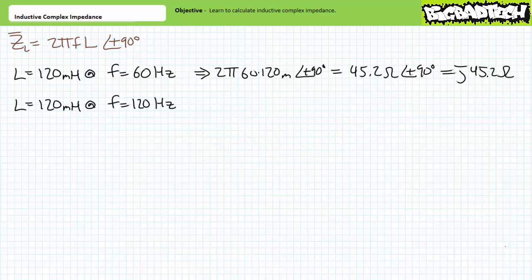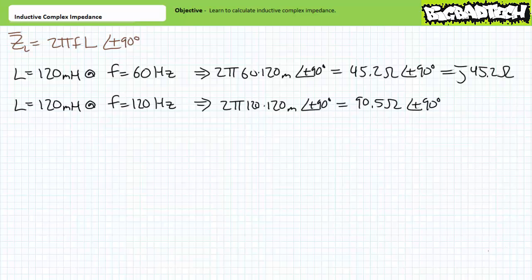You should realize that the magnitude of the complex impedance of the inductor should increase, since the complex impedance of purely inductive elements is proportional to 2πfL. Given frequency is doubled, the magnitude of inductive impedance will be twice its original value. The angle, however, will remain fixed at positive 90 degrees. Substituting in the given values at 120 hertz, we find the magnitude of the inductive complex impedance has increased to roughly 90.5 ohms — double our earlier magnitude — yet the angle remains fixed at positive 90 degrees. Increasing frequency increased inductive complex impedance.